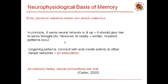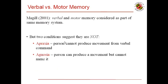After listening till now, you might want to ask whether verbal or motor memory is considered part of the same memory system. The answer is not so straightforward. Although some researchers consider them to be part of the same system, there are two conditions which suggest they are not: one of them is apraxia, the other is agnosia. The person is told to do similar things, however, sometimes based on the problem they cannot produce the movement from a verbal command, or sometimes even if they can produce the movement, they cannot name it. This gives an intuitive idea that verbal and motor memory might not be the same.